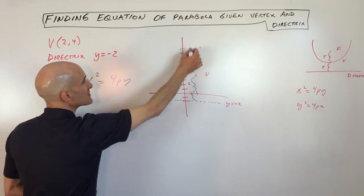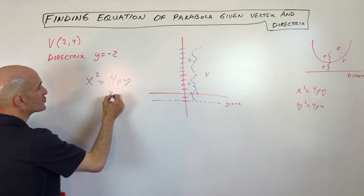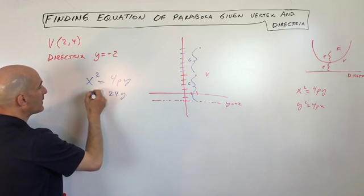And p is going to be 6, the distance from the vertex to the focus. So that's going to be x squared equals 24y.